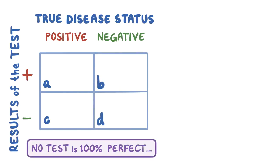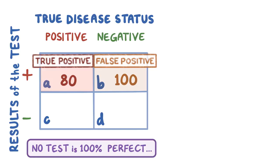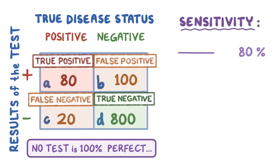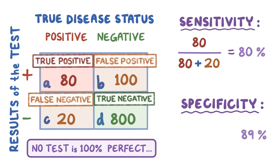But no test is 100% perfect. So let's say that cell A contains 80 true positives, cell B contains 100 false positives, cell C contains 20 false negatives, and cell D contains 800 true negatives. The sensitivity would be 80%, because there are 100 people who truly have diabetes (cell A plus cell C), and 80 of them in cell A are true positives — so this test correctly identifies 80% of people with diabetes. The specificity would be 89%, because 900 people don't have diabetes (cell D plus cell B), and 800 of them in cell D are true negatives — so the test correctly identifies 89% of people who don't have diabetes.